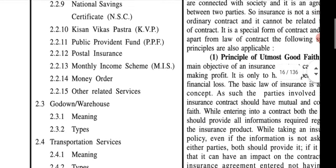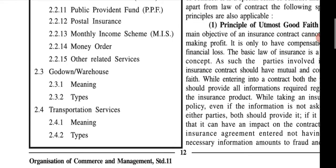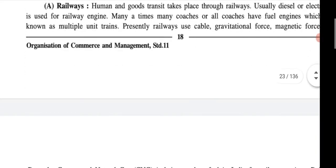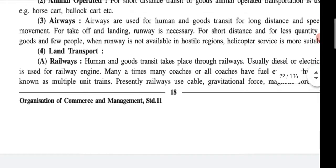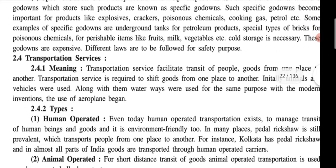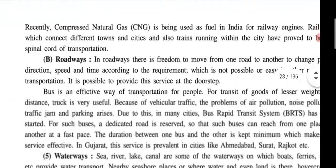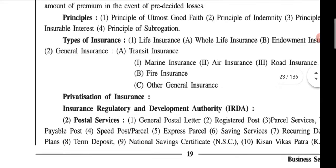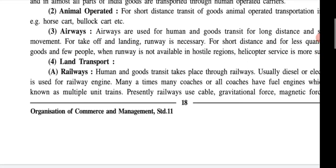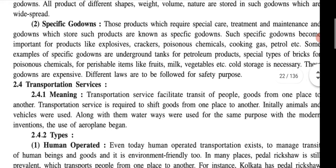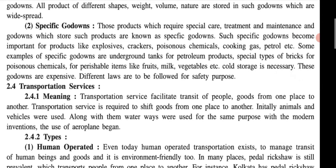So in total we have done three services: insurance, postal, and godown service. The last one — transportation service — is remaining. We will complete it in the next two to three lectures. Transportation service starts from page number 80 and ends around page 93 to 99, so maximum two to four lectures will be required. From the next lecture we start the transportation service.